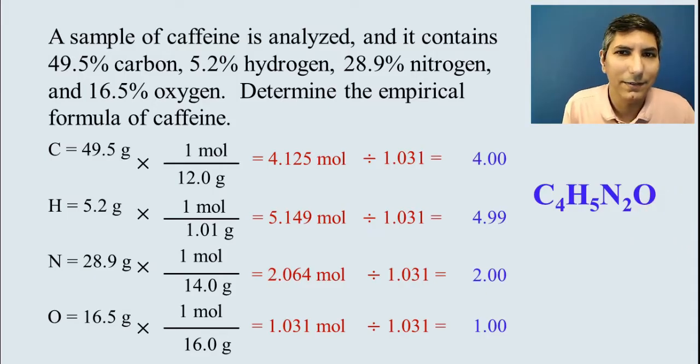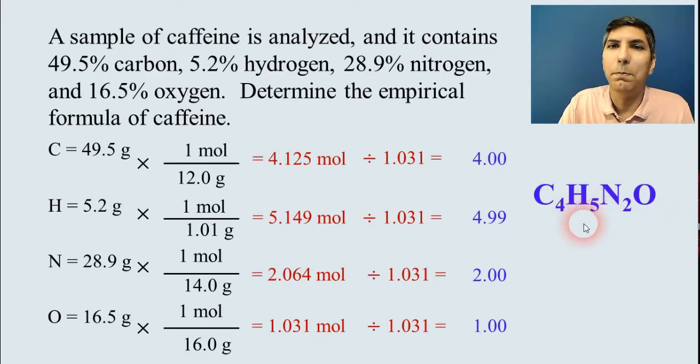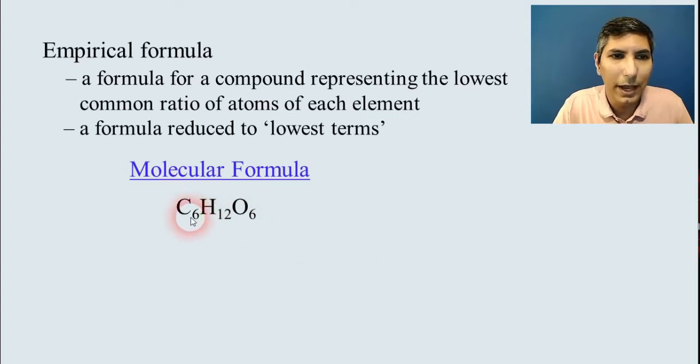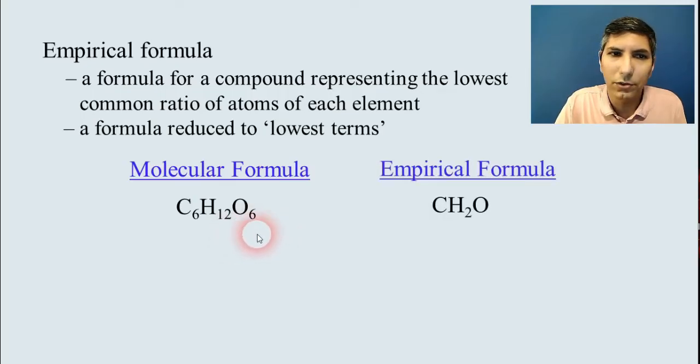Now, you might be thinking, hang on a second. We saw the formula for caffeine on the last slide, and this was not it. So what's the deal here? We actually don't have the real formula. This is what's called the empirical formula. And the empirical formula is a formula for a compound that represents the lowest common ratio for atoms of each element. It's kind of like a formula that's been reduced down to lowest terms. It's like, for example, if we have glucose that has the actual or the molecular formula C6H12O6. If you reduce that down to lowest terms, its empirical formula becomes CH2O because you can divide each of those subscripts by a factor of 6. So CH2O is the empirical formula.